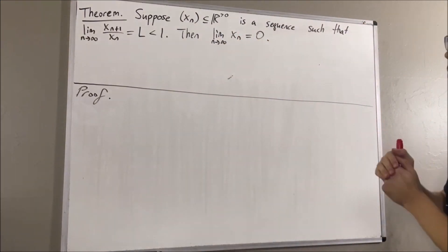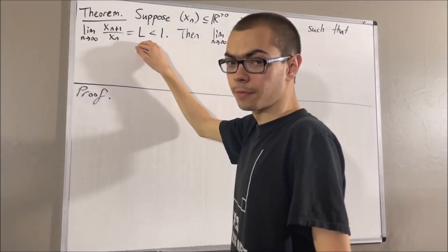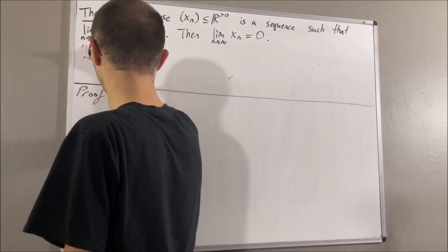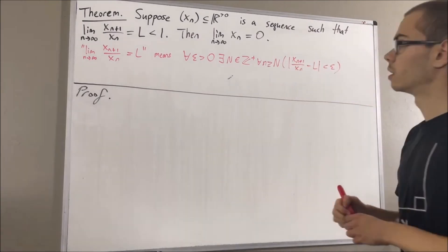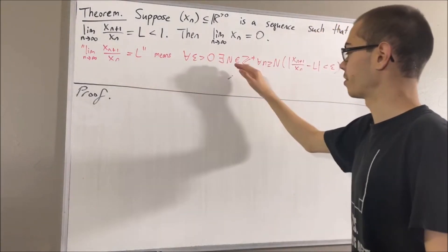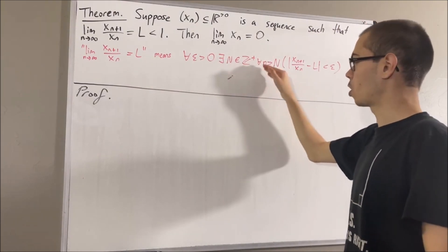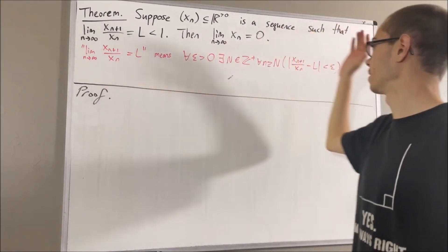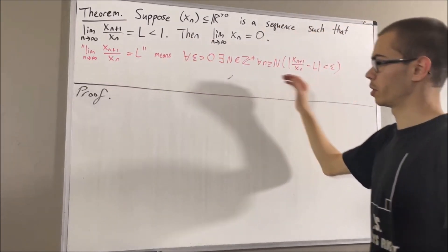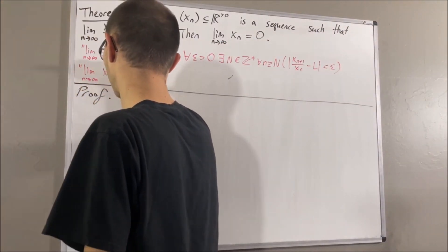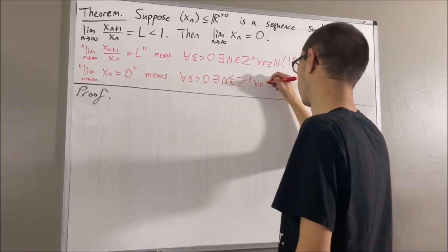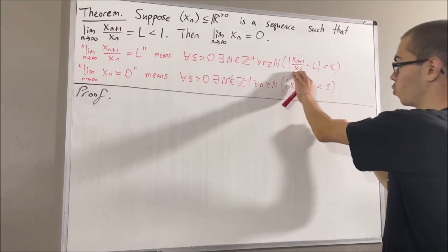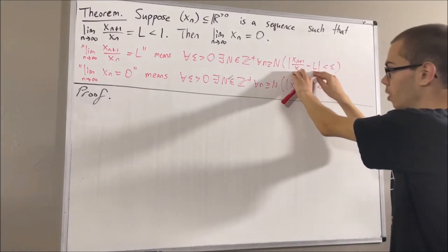Now, first of all, what does this mean? Well, by definition of the limit of a sequence, this means the following: for every epsilon greater than 0, there exists a positive integer N, such that for all n greater than or equal to N, the absolute value of x_{n+1}/x_n minus l is less than epsilon. Similarly, the conclusion means the same thing but with xn and 0 in place of x_{n+1}/x_n and l.